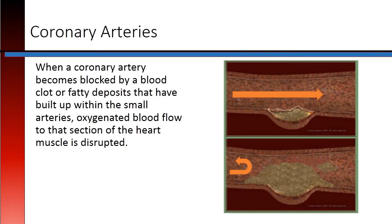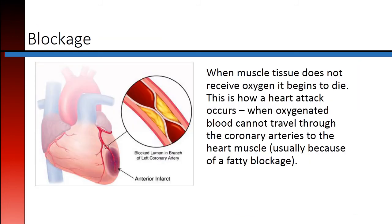When a coronary artery becomes blocked by a blood clot, or fatty deposit that has built up within the small arteries, oxygenated blood flow to that section of the heart muscle is disrupted. When muscle tissue does not receive oxygen, it begins to die. This is how a heart attack occurs — when oxygenated blood cannot travel through the coronary arteries to the heart muscle, usually because of a fatty blockage.